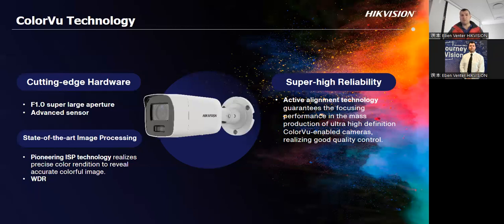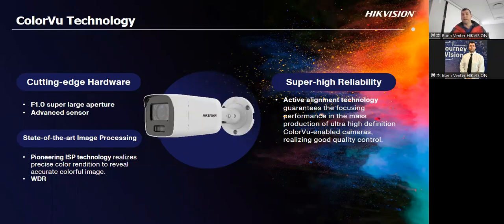If you're looking at 4 megapixel or 8 megapixel cameras, please don't use a TV — there's a big resolution difference, which is why we use monitors. If you're using an 8 megapixel 4K resolution ColorView camera, don't use a normal monitor. You need a 4K resolution monitor to see the 4K resolution properly. It's like watching HD Ultra on DSTV but still using an old HDMI cable with an HD-ready TV — you won't get the clear image.